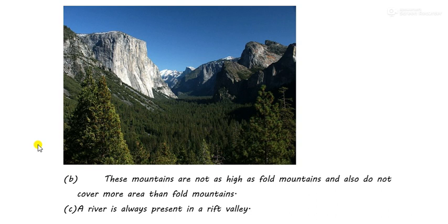The next feature is that a river is always present in the rift valley. The land which has sunk down, also known as the rift valley, is always accompanied by a river. Wherever there is a rift valley, inside it there is always a river present.